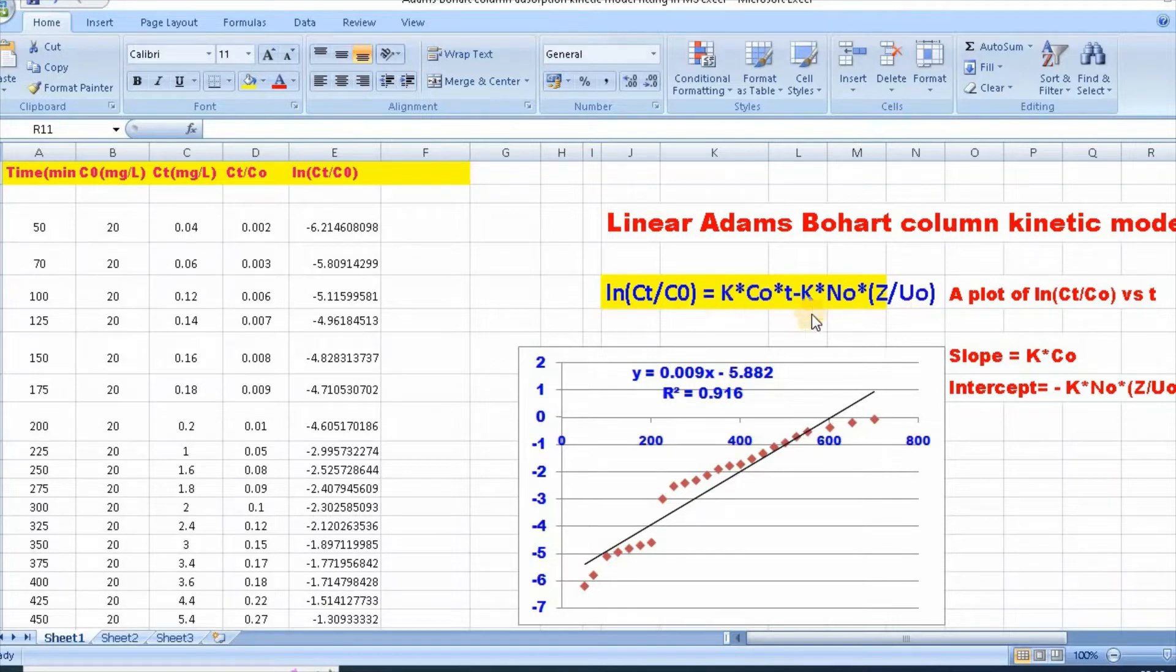So, from this equation, a plot of ln(Ct/C0) versus t will give you slope equal to k into C0 and intercept equal to minus kn0z divided by u0. So, from linear fitting, we can easily calculate Adams-Bohart model's parameters.